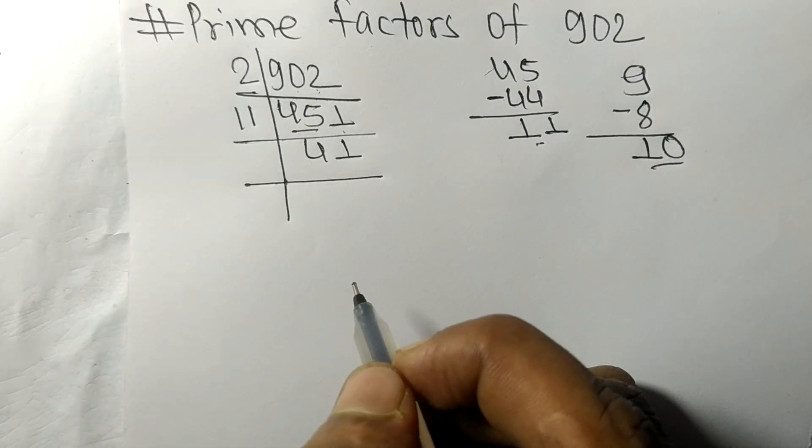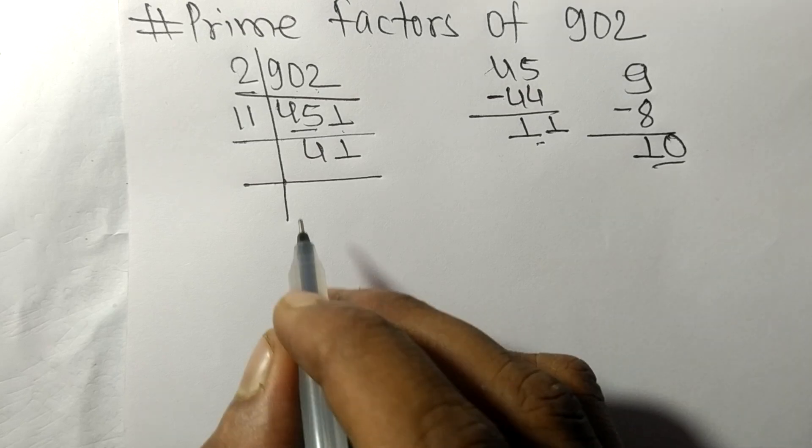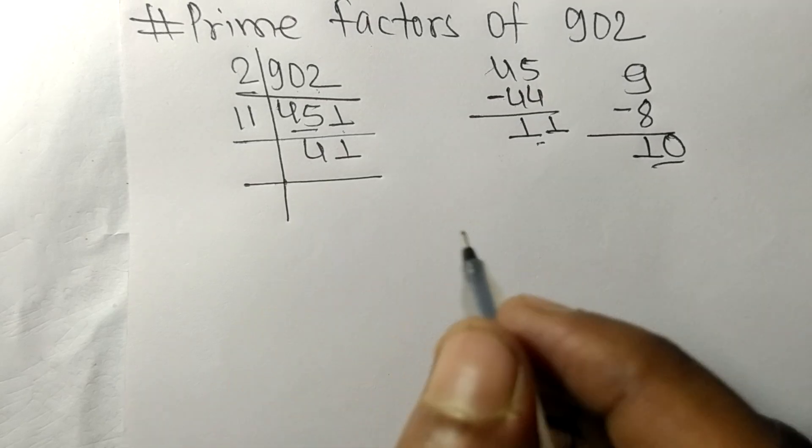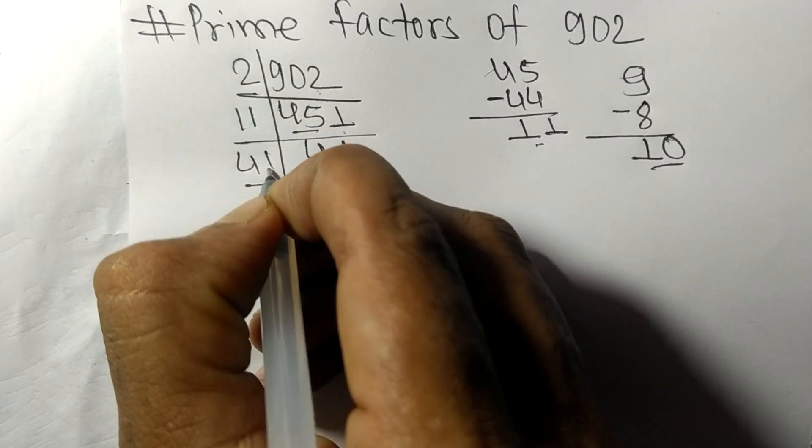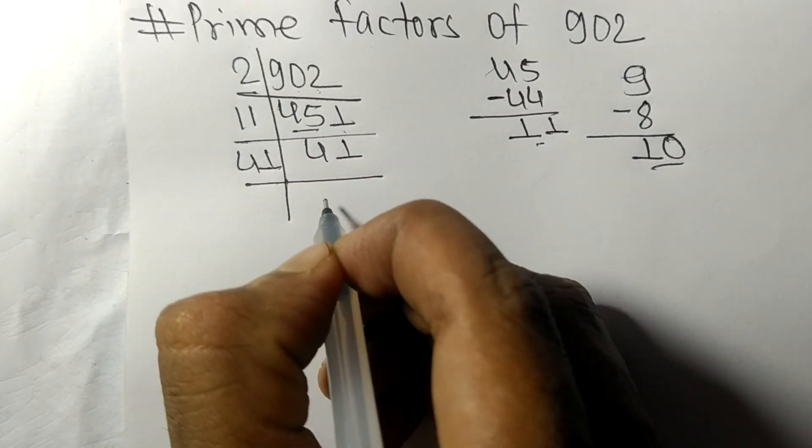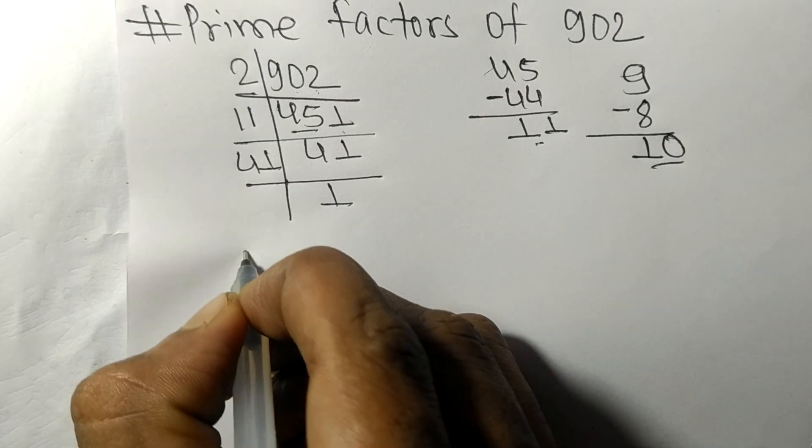Now we got 41, which is our prime number, so it is exactly divisible by 41 itself, and we get here 1.